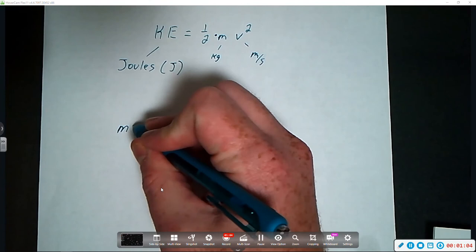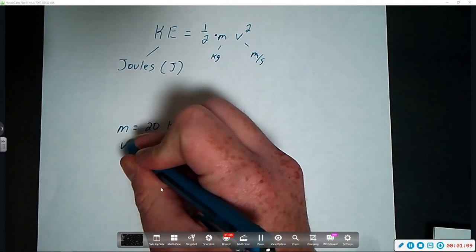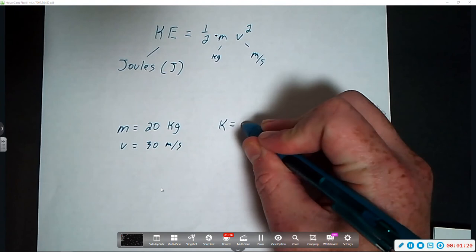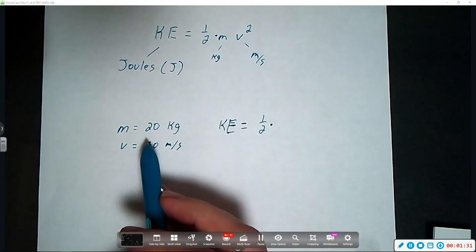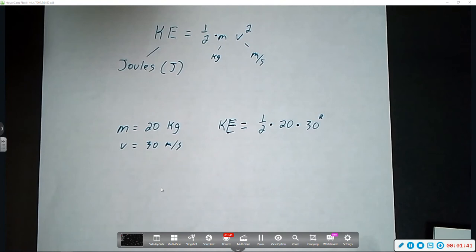So let's say, for example, we know that the mass of an object is 20 kilograms, and it is moving at 30 meters per second. We would just calculate kinetic energy. We take these values and plug them in. So KE is equal to 1 half times mass, which in this example is 20, times the velocity, 30 squared.